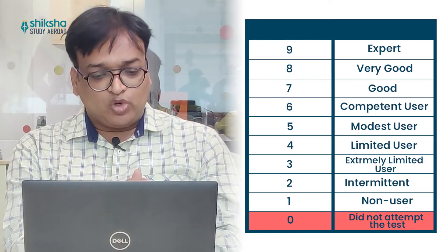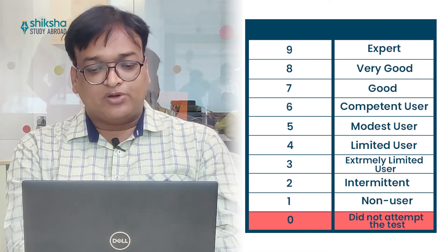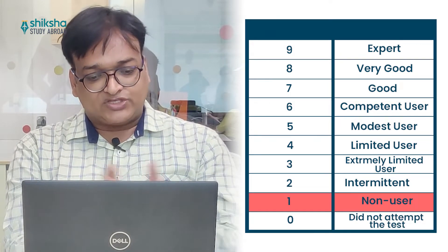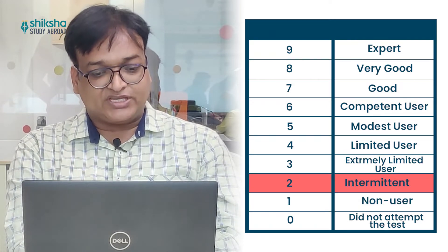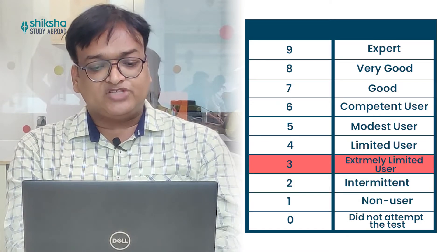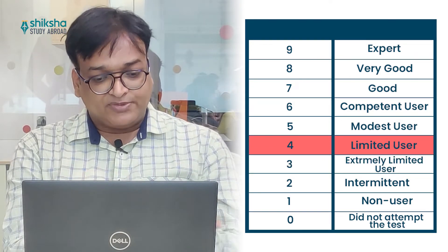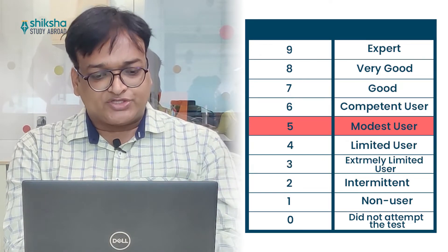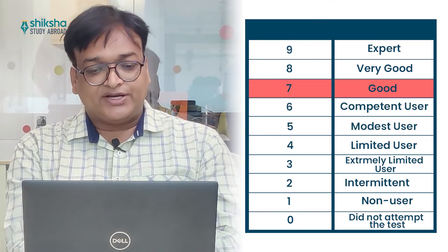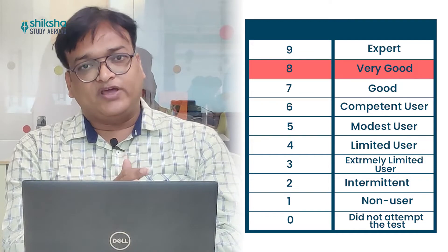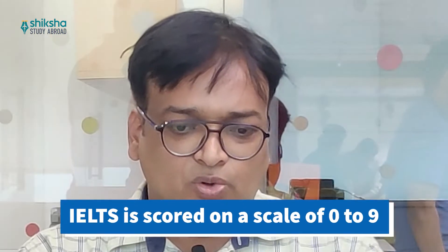As you can see on the screen: a zero band score suggests you did not attend the test. One is for non-user. Two is for intermittent English language proficiency. Three is for extremely limited user. Four is for limited user. Five is for modest user. Six is for competent user. Seven is for good user. Eight is for very good user. Nine is for expert user.